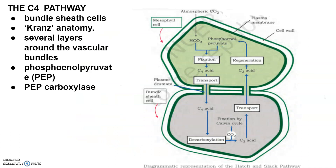In the C3 cycle, for every molecule of carbon dioxide entering the Calvin cycle, three molecules of ATP and two molecules of NADPH are required. To make one molecule of glucose, six turns of the cycle are completed and the total energy required is consumed.